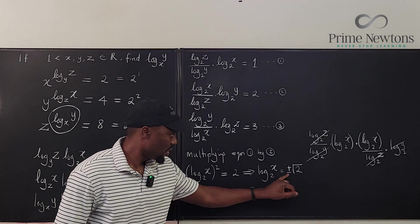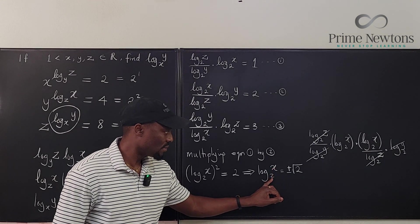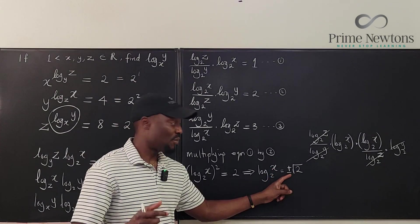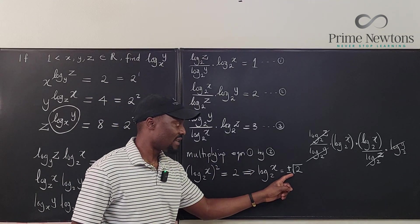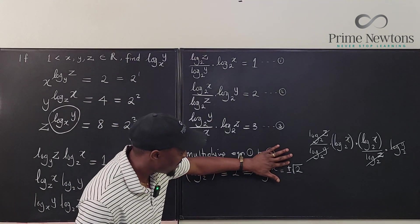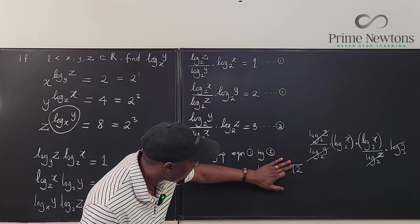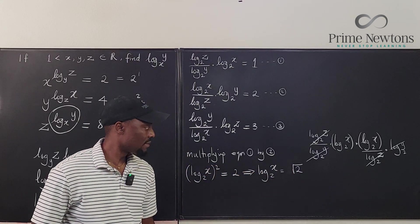log x base two to be negative? But we said x is greater than one. So that means that we can't have the negative option. I'm going to take it out. That's it.